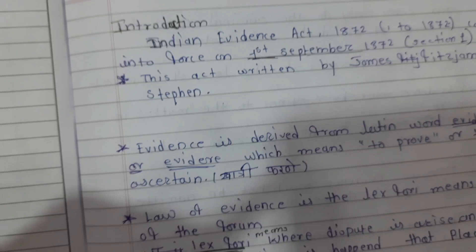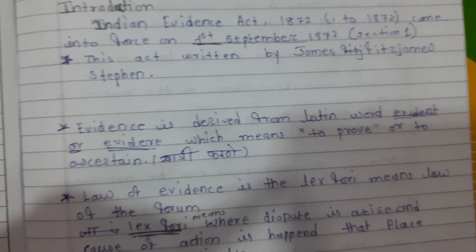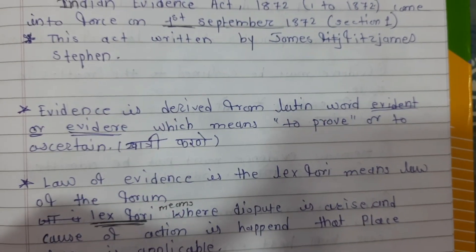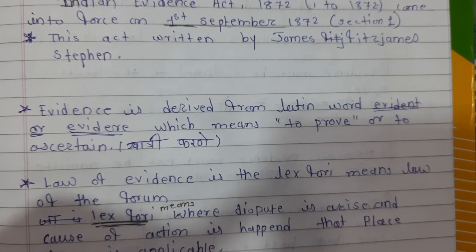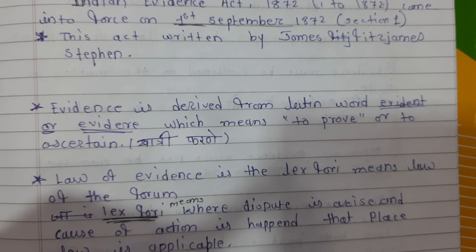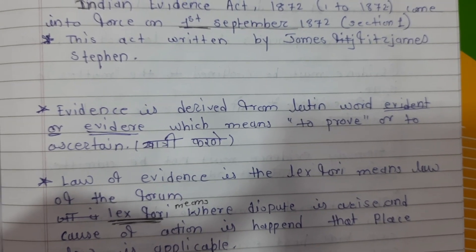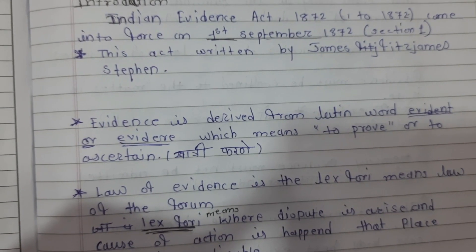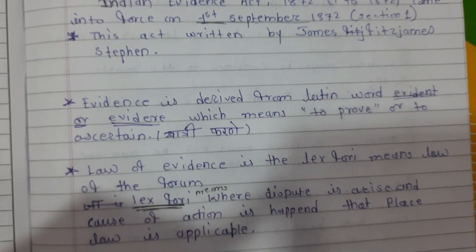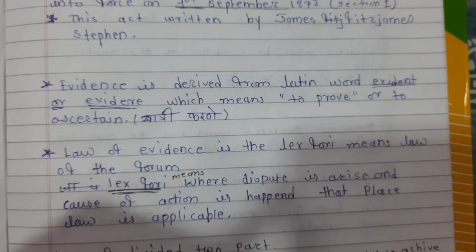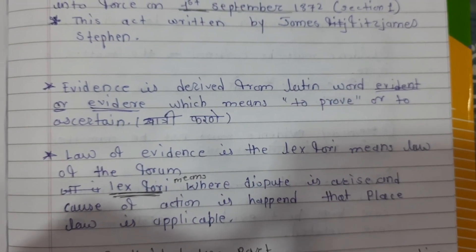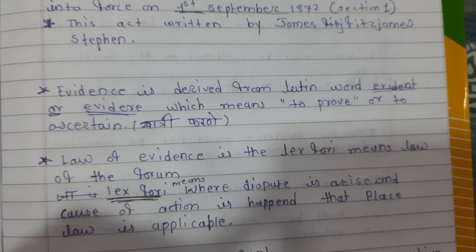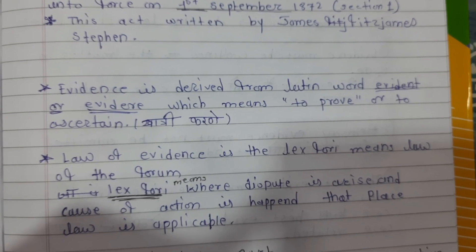The word 'Evidence' is derived from the Latin word 'evident' or 'evider', which means to prove or to ascertain. The law of evidence is lex forie, meaning the law of the forum.